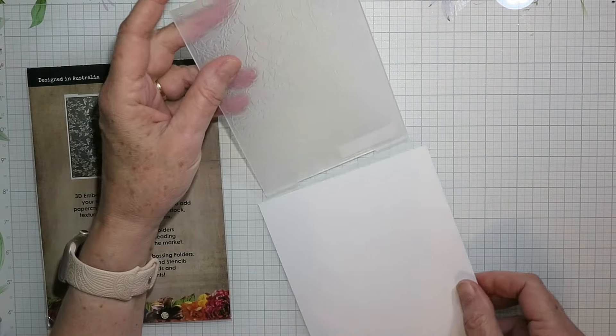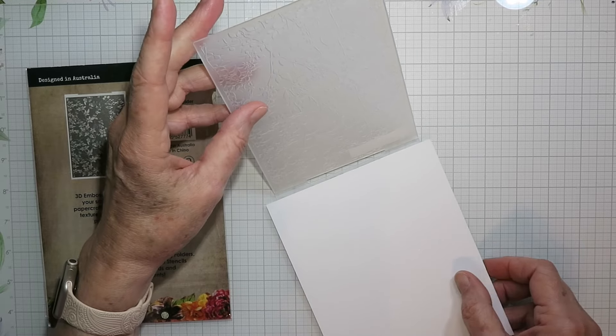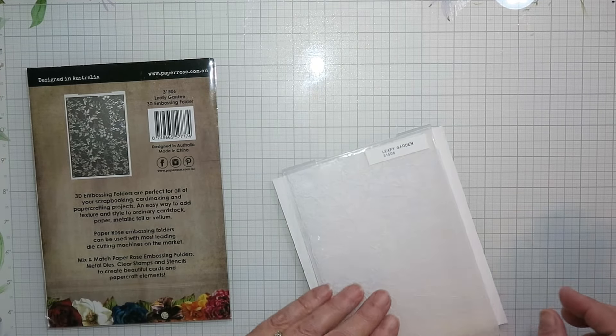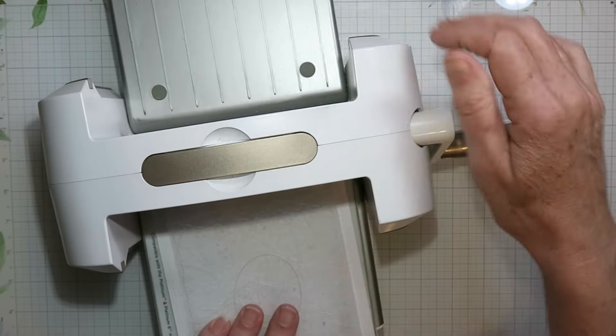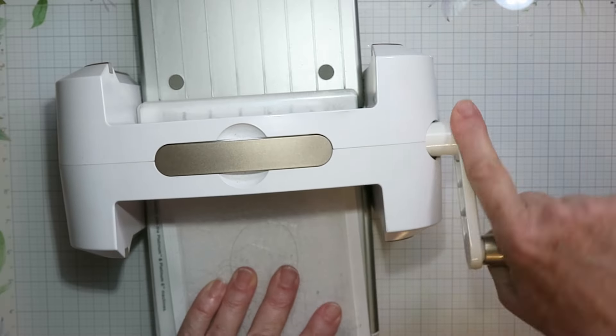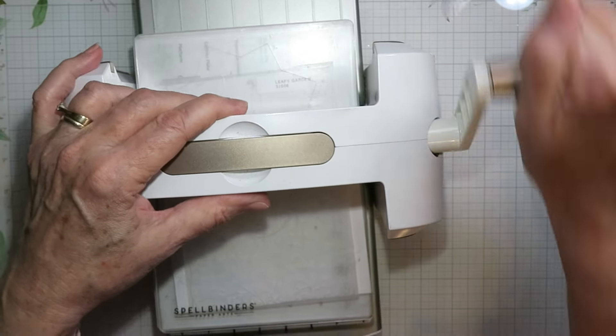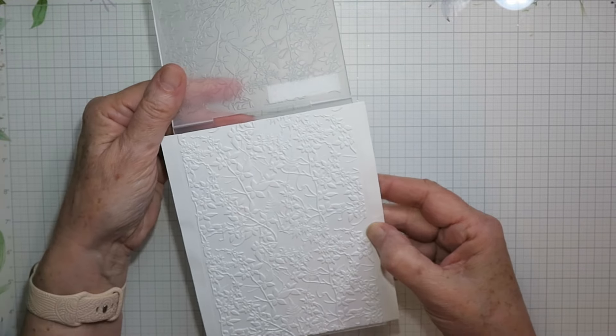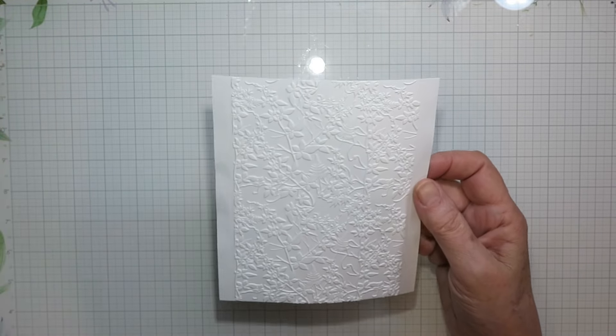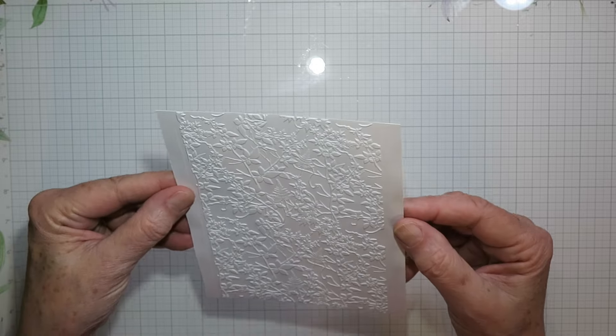I am misting on both sides of my piece of cardstock. I've cut it a little bit wider for this technique just so I had somewhere to put my hands. With my Spellbinders Platinum 6 machine, I find I can get this through with just the base plates and the embossing folder, but each machine is different so do what you need to do for your machine.